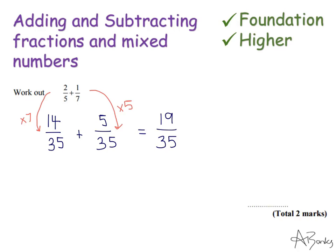Another common mistake we see is that students would get 19 over 70 because they're adding together the denominators as well, but you don't need to add those together. So that's the answer, 19 thirty fifths.